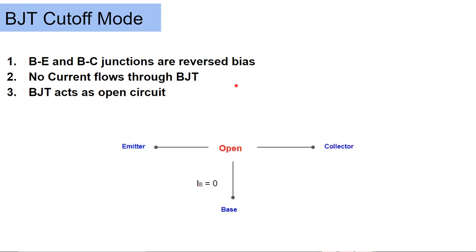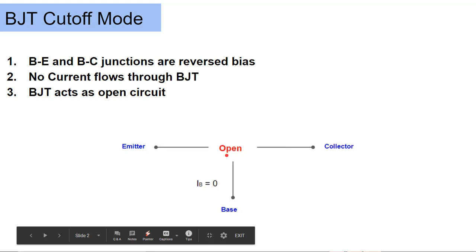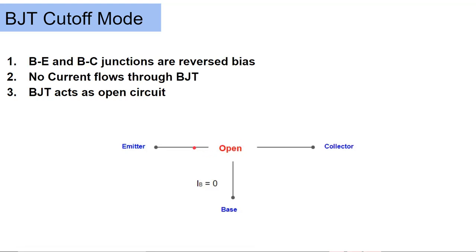So what is BJT cutoff mode? To put BJT in cutoff, definitely the base-emitter as well as the base-collector junction should be reverse biased. So no current will flow through the BJT and BJT will act as an open circuit. Here you can see this picture represents the situation — emitter, base, and collector — and here we have written 'open'. It means that BJT is working as an open switch or open circuit and no current is flowing from emitter to base as well as towards the collector.